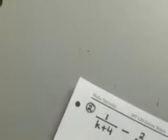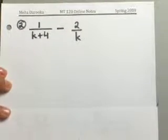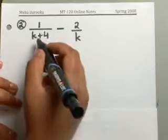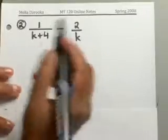Let's take a look at another example here. Now in this example, we are talking about two expressions with different denominators. You have 1 over K plus 4 minus 2 over K.